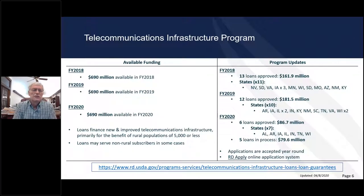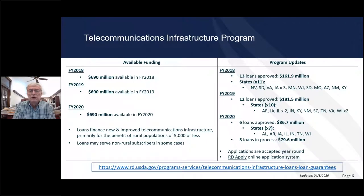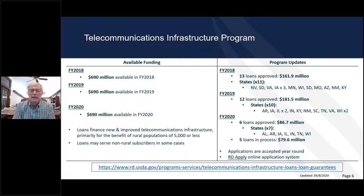The first stopping point is an infrastructure program that provides funding to rural independent telephone companies to build out broadband facilities today. This has been our hallmark program since 1949. Each year there's around $590 million available in that program, and we are using it to build fiber-to-the-home facilities in rural areas.